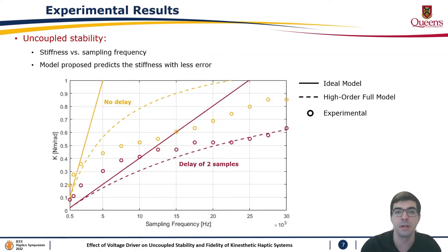Here we have the uncoupled stability results for stiffness versus sampling frequency. We can see that the proposed model provides less error predicting the maximum stiffness, especially for high sampling frequencies. Additional analysis is presented in the paper.